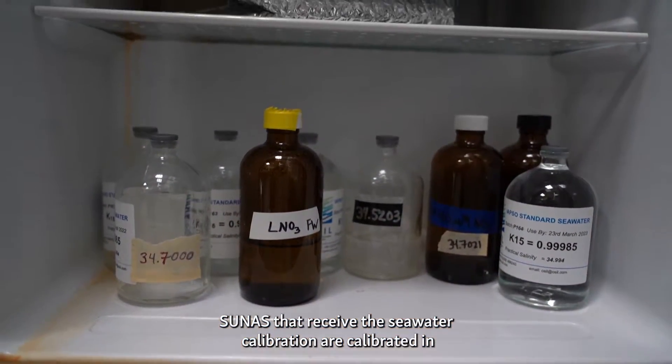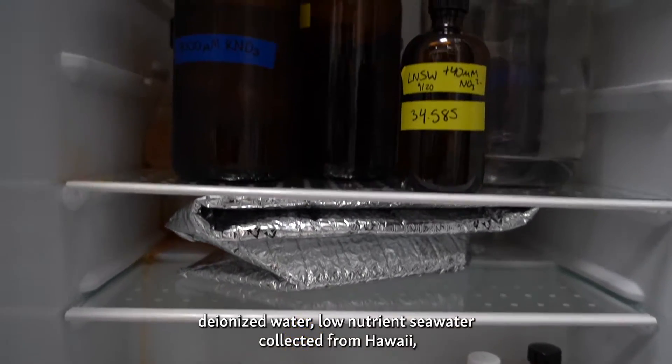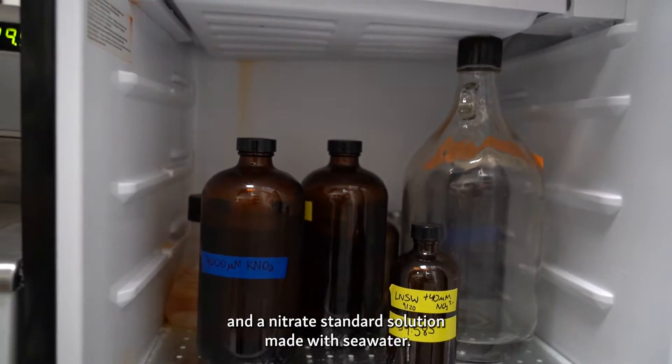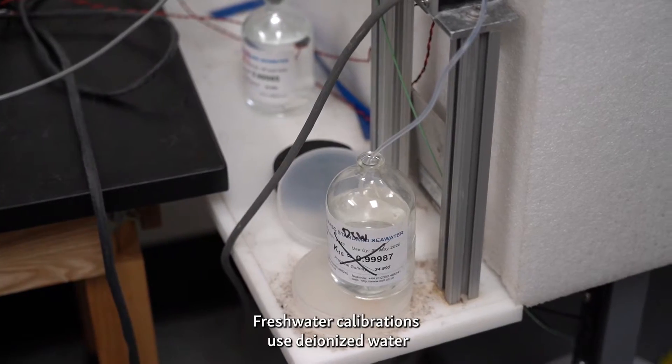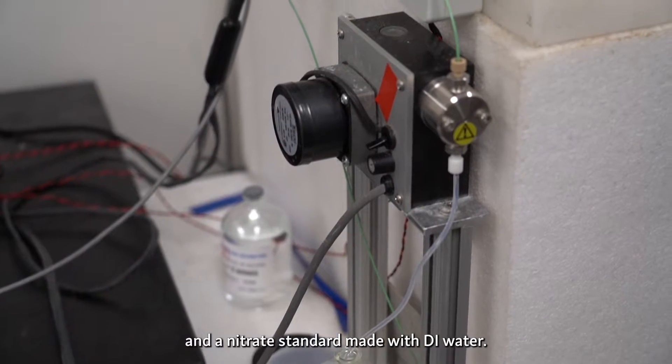SUNAs that receive the seawater calibration are calibrated in deionized water, low-nutrient seawater collected from Hawaii, and a nitrate standard solution made with seawater. Freshwater calibrations use deionized water and a nitrate standard made with DI water.